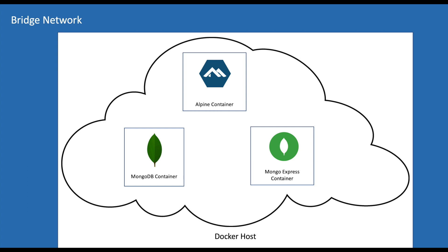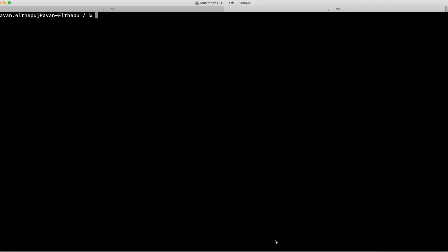But our goal was to access the container with the name of the container instead of using an IP address — and this is not possible using the default bridge network. To access a container by its container name we need to create a custom bridge network. This is one of the key differences between the default bridge network and a custom bridge network — the default bridge network forbids accessing other containers using the container name.